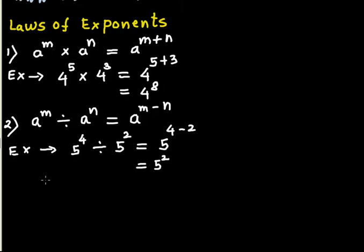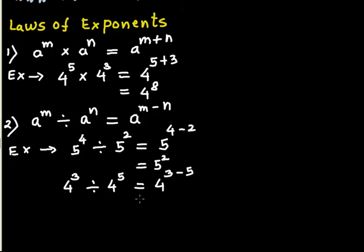Taking one more example: if 4 to the exponent 3 is divided by 4 to the exponent 5, you subtract the second exponent from the first, so 3 minus 5, and your answer will be 4 to the exponent negative 2.